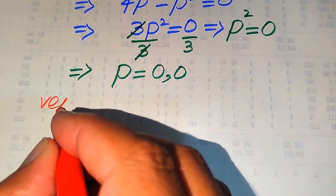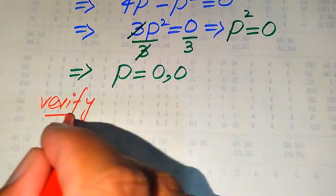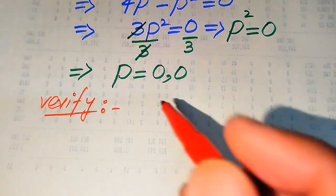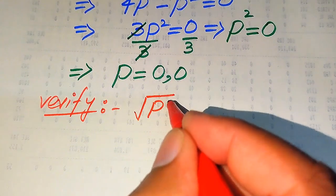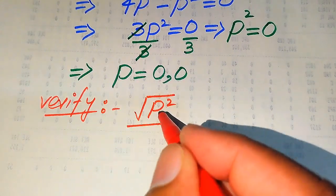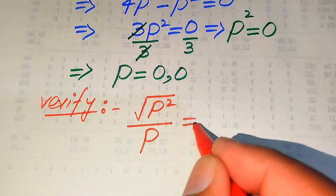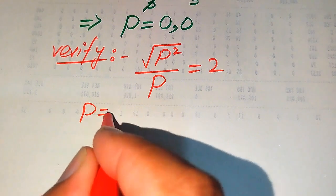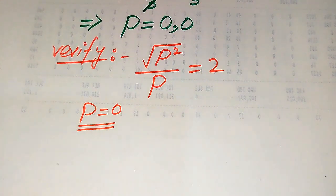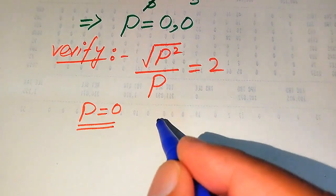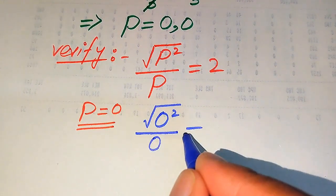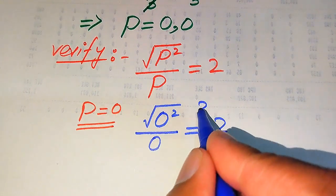Now we need to verify whether this value of p satisfies the given equation or not — in other words, whether p = 0 is a solution or an extraneous root. We copy down the given equation: √(p²) / p = 2. When we substitute p = 0 into the left-hand side, we get √(0²) / 0 = 2, and we check whether this holds.